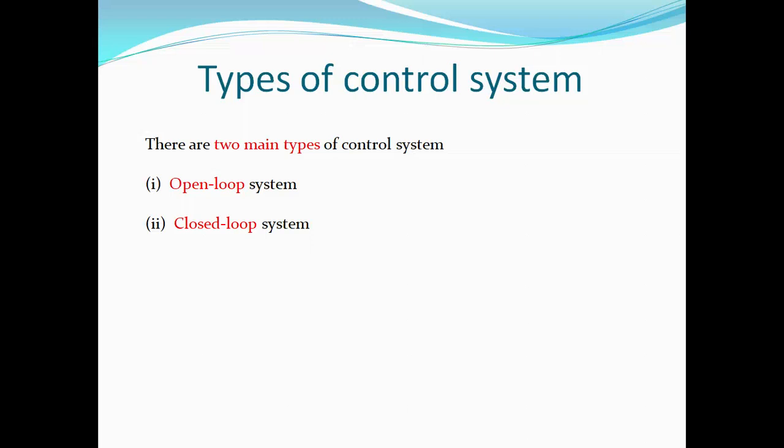There are two types of control systems. The first one is the open loop system and the next one is the closed loop system.